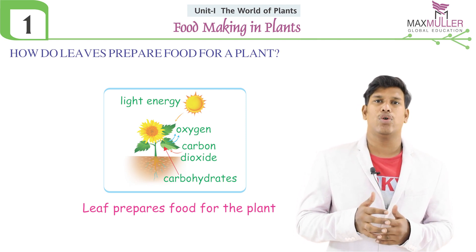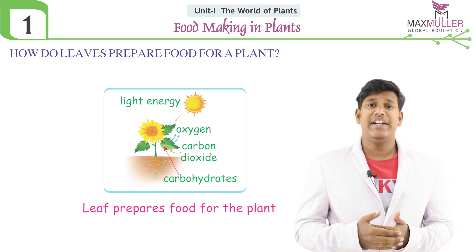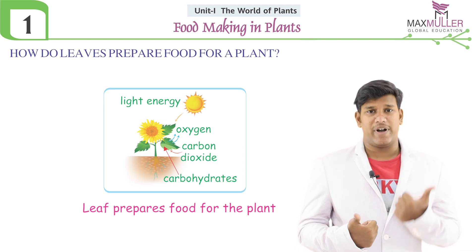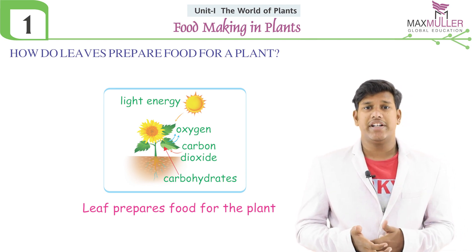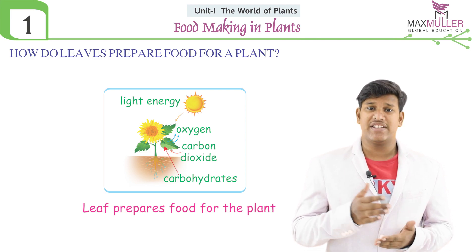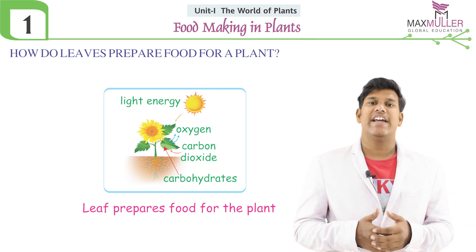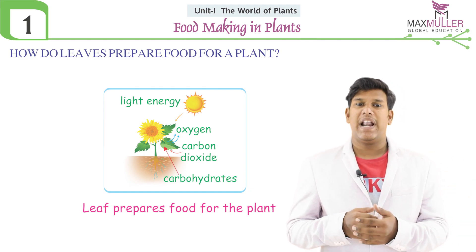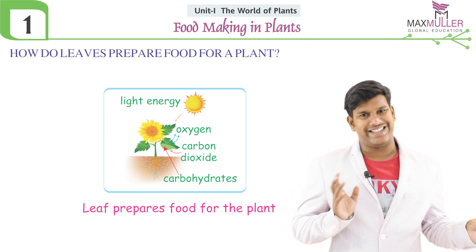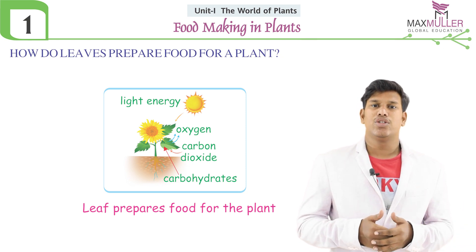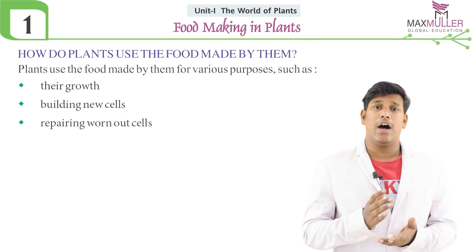For this process, plants require water, carbon dioxide, and sunlight. By putting water along with carbon dioxide in the presence of sunlight and chloroplast, plants can prepare their own food. Plants prepare food in the form of sugars or starch, which are stored in the storing tissues.